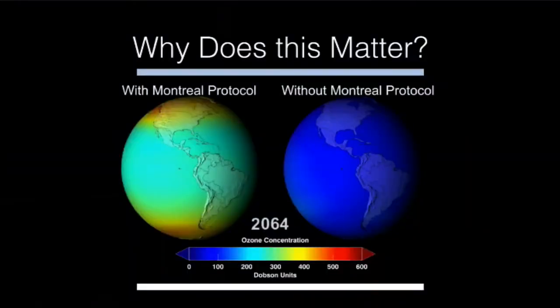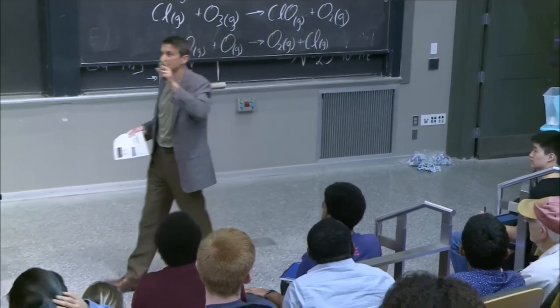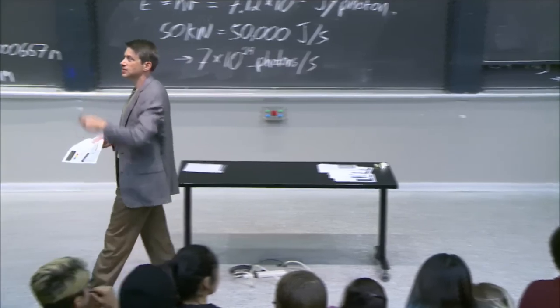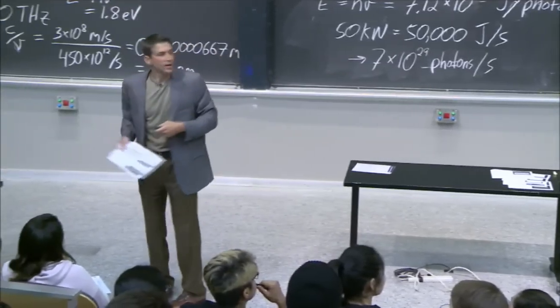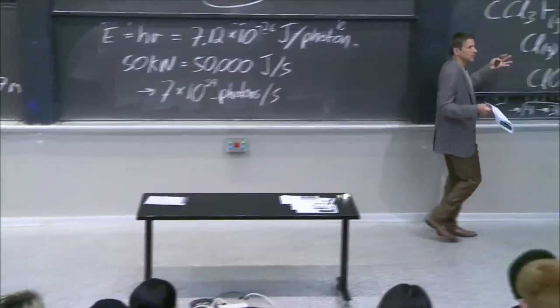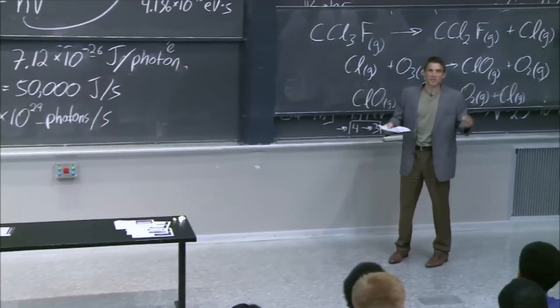And we're almost back to normal ozone levels. And we avoid this. And by the way, if this had happened, the prediction at the time was roughly 280 million additional cases of skin cancer over this generation. This is a very big deal. And it all comes back to absorption of electrons by atoms and molecules.